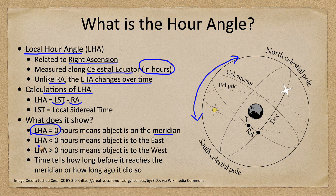If the local hour angle is less than zero, then the object is to the east — it has risen but has not yet reached the meridian. The value of the local hour angle tells you how long before it does reach the meridian. For example, if the local hour angle were negative two hours, then you'd know that two hours later that object would be transiting the meridian. If the local hour angle is greater than zero, then the object is in the west — it has already passed the meridian — and that tells you how long ago it transited. Adding 24 hours would bring you back to when it will be on the meridian again.